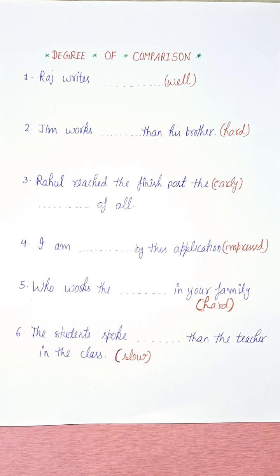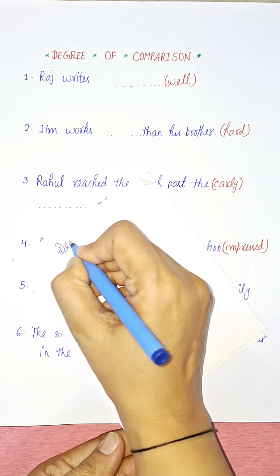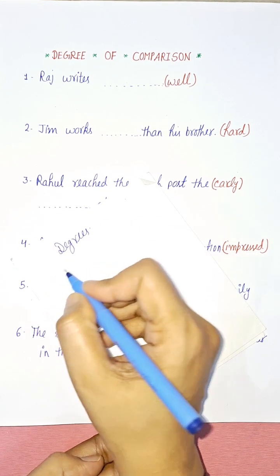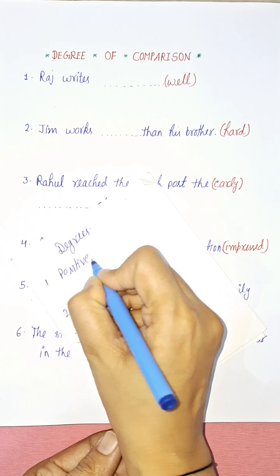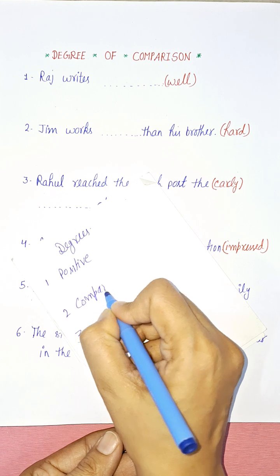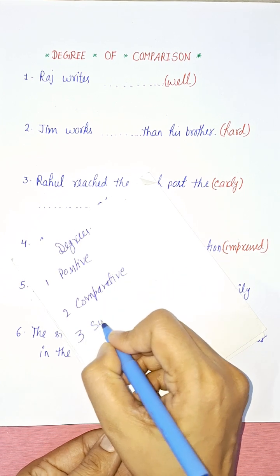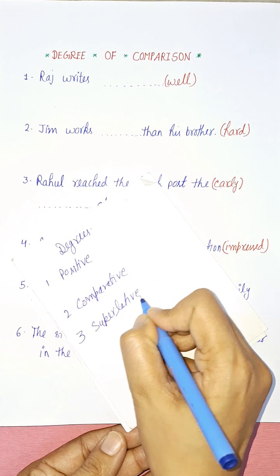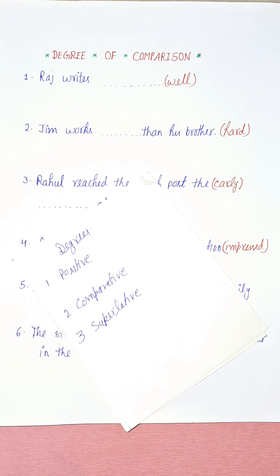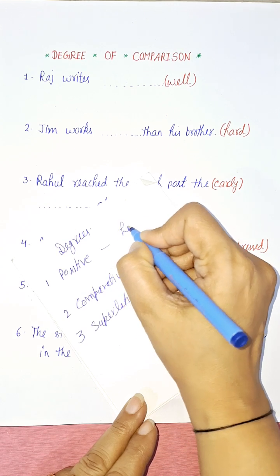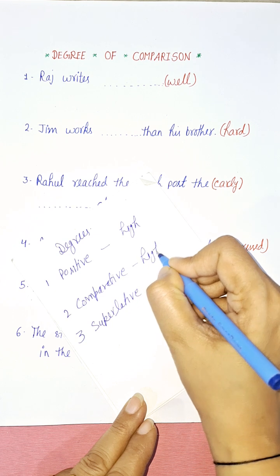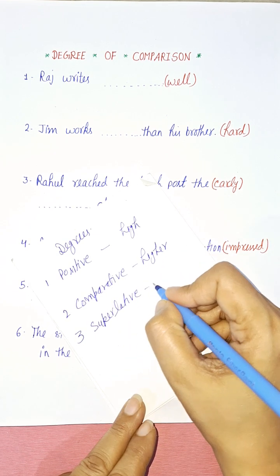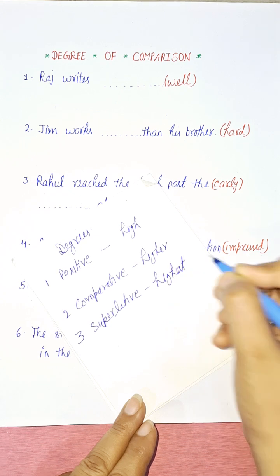For example, take the word 'high.' We have three degrees: high is the positive degree, higher is your comparative degree, and highest is your superlative degree. High, higher, highest.